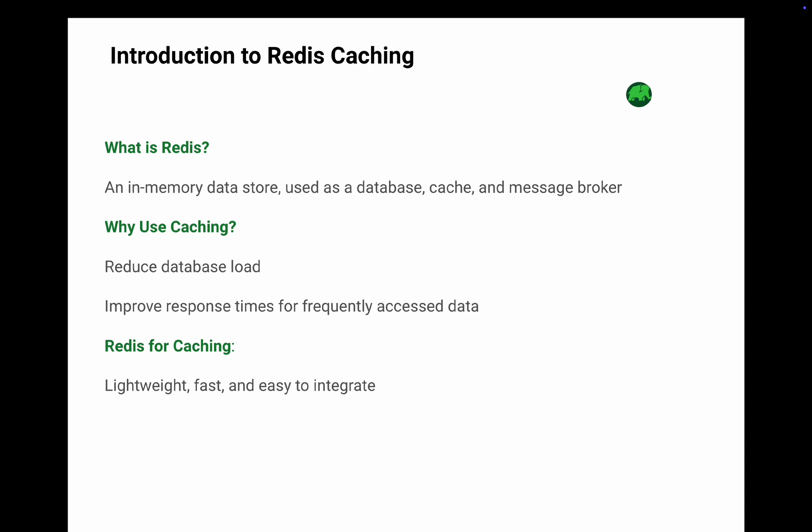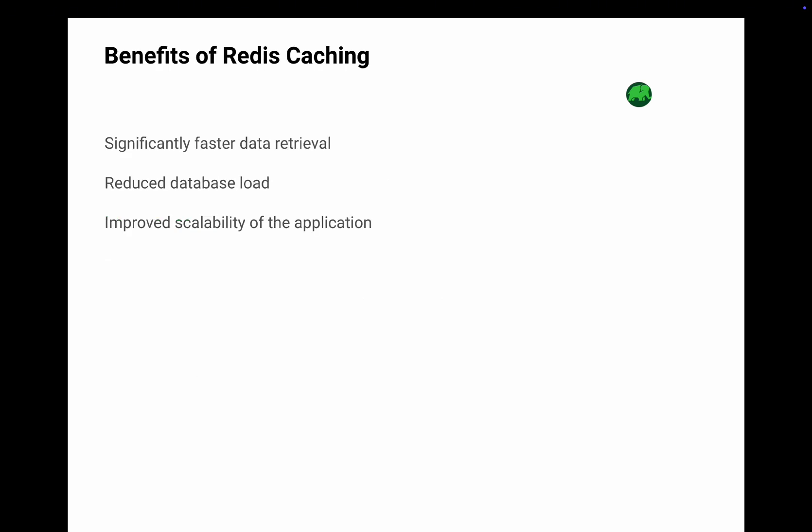Now let's talk about why caching is such a game changer. Every app today aims for lightning fast response times. Caching helps you achieve that by reducing database load — instead of querying your database for the same data repeatedly, you retrieve it from Redis. Frequently accessed data is served almost instantly. The key benefits of Redis caching: faster data retrieval — queries that took seconds can now take milliseconds; reduced database load — your database doesn't have to work overtime even under heavy traffic; and improved scalability — Redis helps your app handle more users without breaking a sweat.